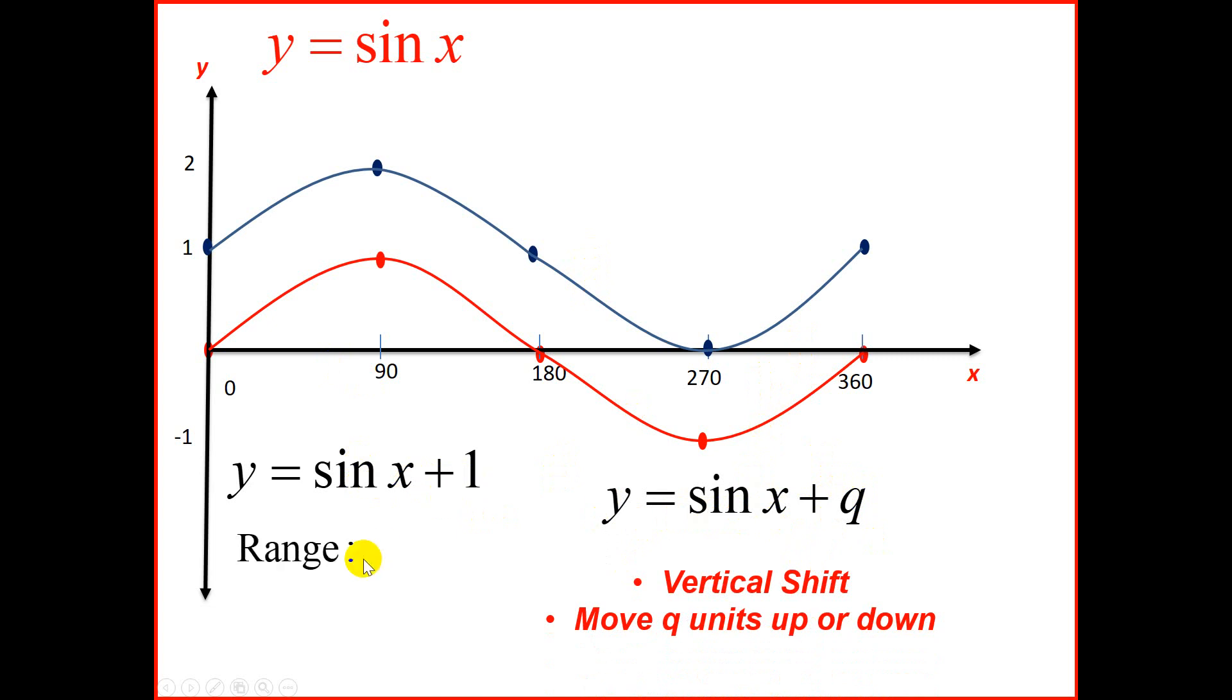Looking at sine x plus 1, if we look at our range, the range on the original graph was minus 1 to 1. So the range of the new graph means we're going to increase it by 1. So minus 1 plus 1 is 0, and 1 plus 1 is 2, which you can see on the graph as well.